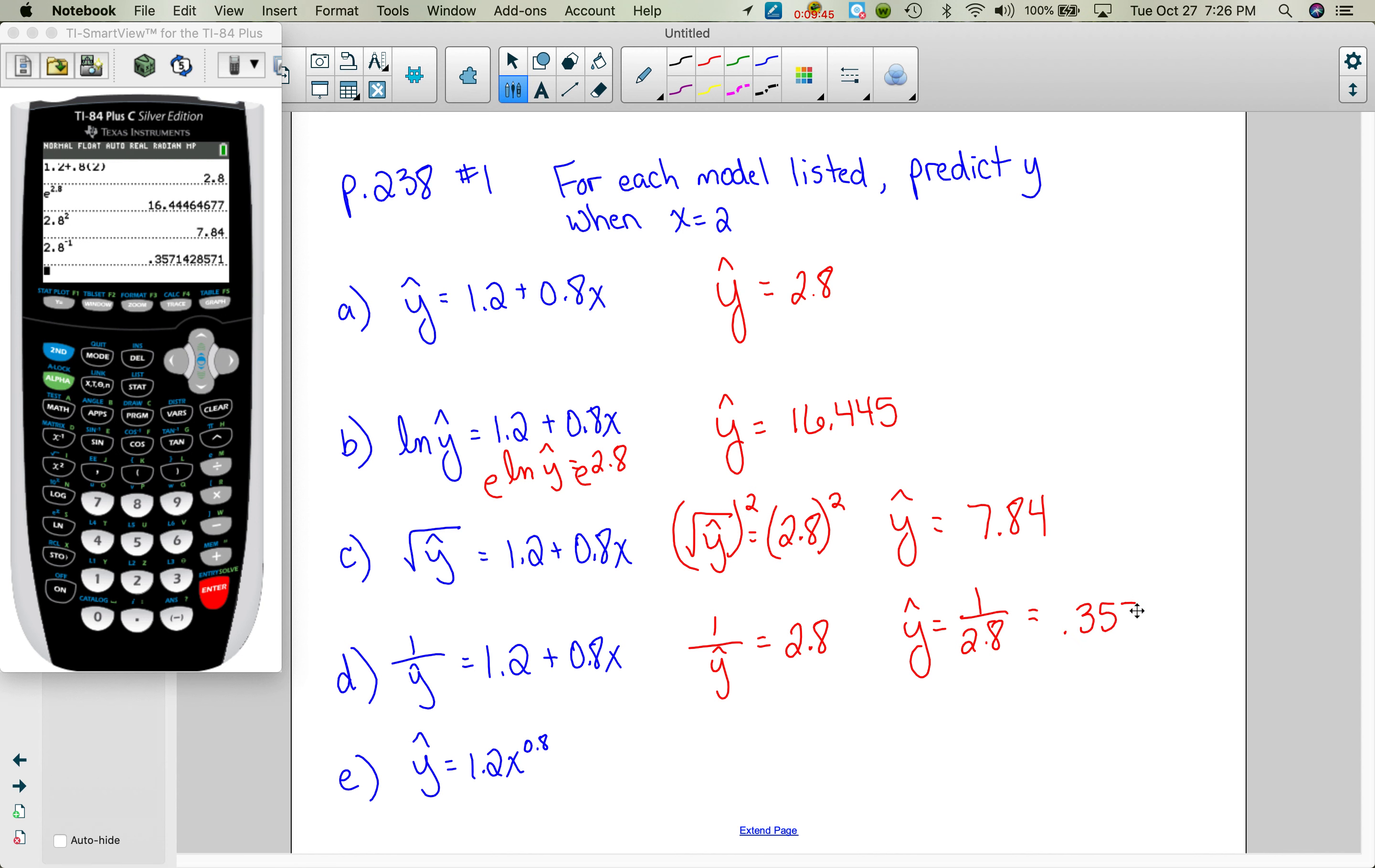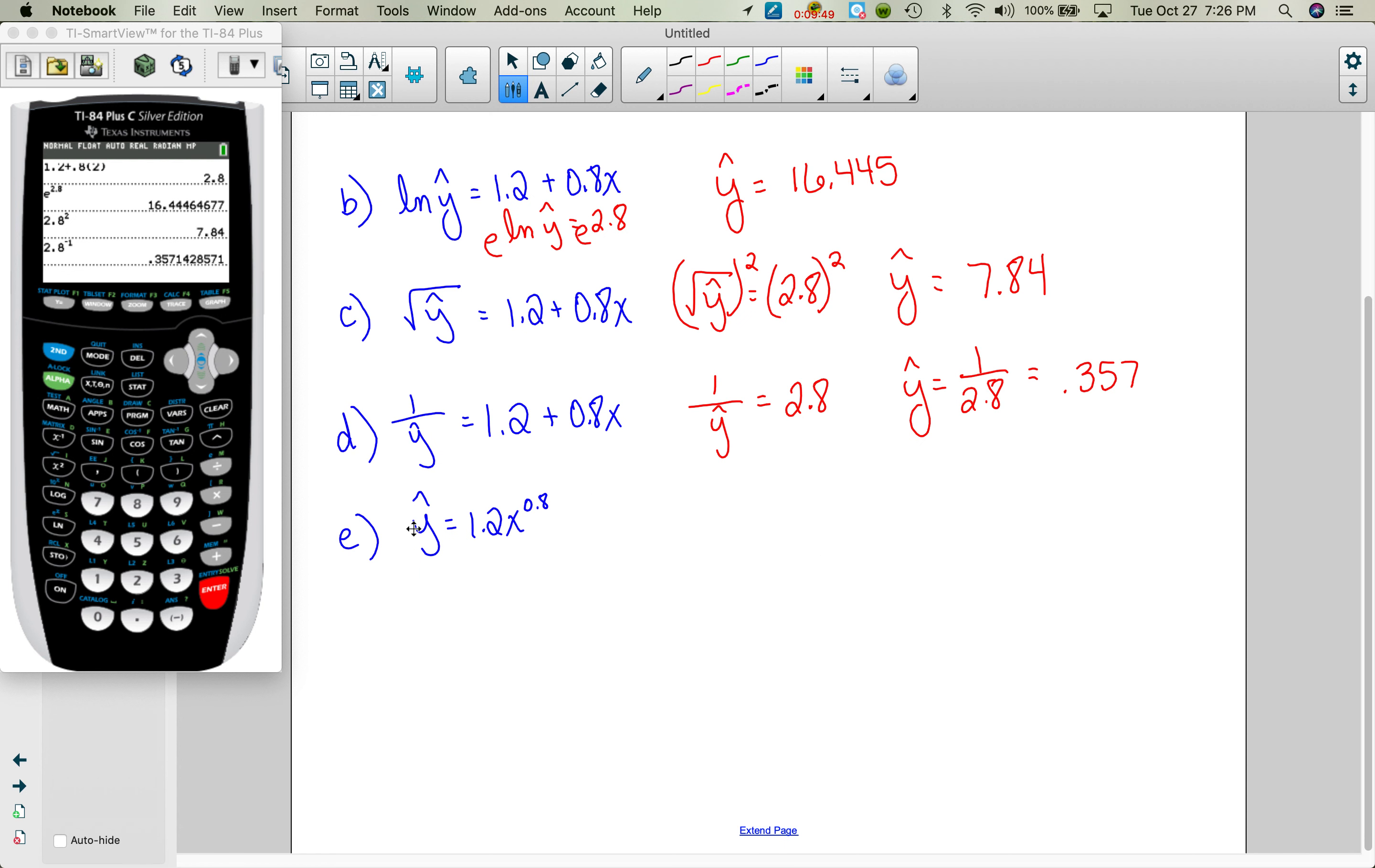And for this last one, notice it's already solved for y hat. So I'm just plugging in a 2, 1.2 times 2 to the 0.8. And I get that y hat is approximately 2.089. So again, no context to that. This just helps you know, once you've created a model, what would you do to undo that?